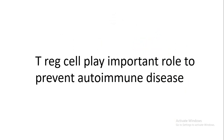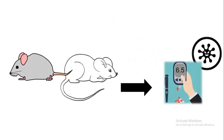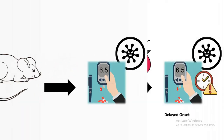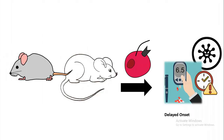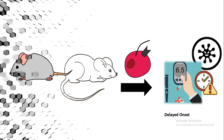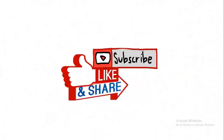T regulatory cells also play a very important role in preventing autoimmune disorders. Non-obese diabetic mice are a model for autoimmune diabetic disorder — these mice are generally prone to develop autoimmune diabetes. If these mice are given T regulatory cells, the onset of diabetes is significantly delayed. This means T regulatory cells can prevent the early onset of several autoimmune diseases through their anti-inflammatory response. That concludes this video on T regulatory cells — if you liked it, please like, share, and subscribe.